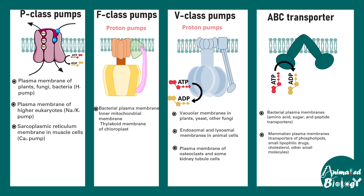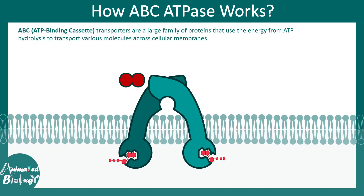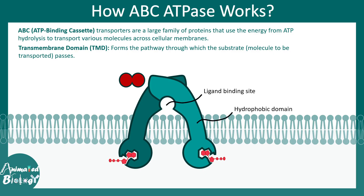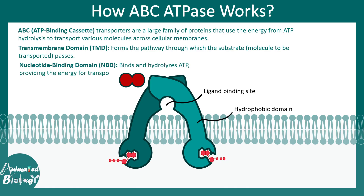Among all four types, F class ATPase and V class ATPase are both proton pumps, but note that F class ATPase generates ATP instead of hydrolyzing it. ABC stands for ATP-binding cassette. These are a large family of proteins that use ATP to transport molecules across the membrane. They have two domains: a transmembrane domain with the ligand binding site, and a hydrophobic domain embedded in the membrane, plus a nucleotide binding domain on the cytosolic side which binds ATP to fuel the pump.